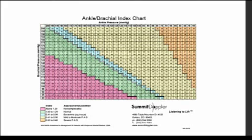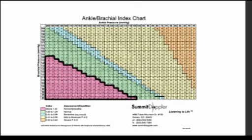Unlike a Doppler-based ABI, the Vantage ABI can properly classify many patients with non-compressible arteries. However, if the ABI is above 1.3, the patient should undergo further testing, possibly including a toe brachial index exam.